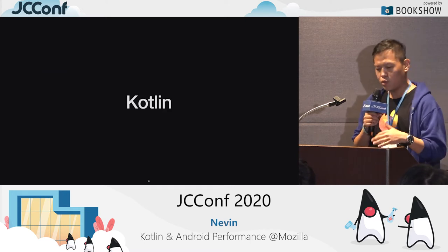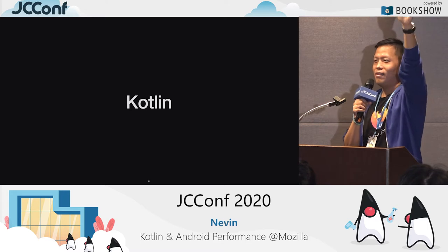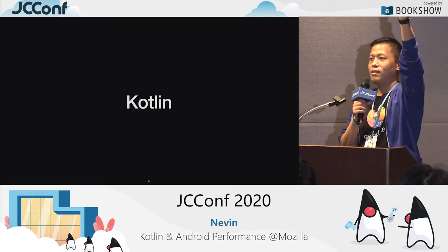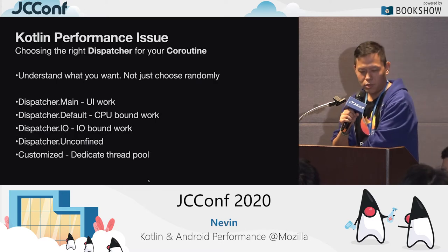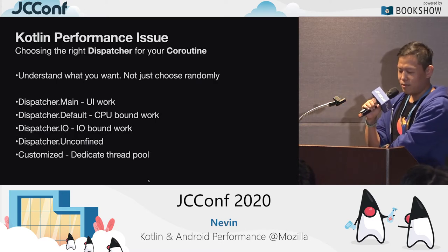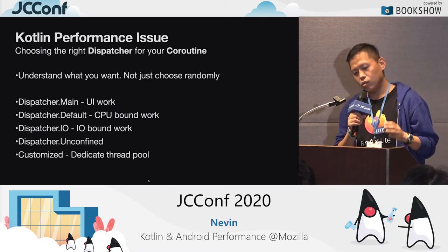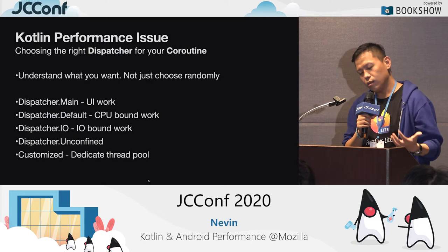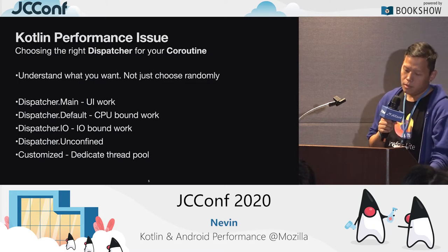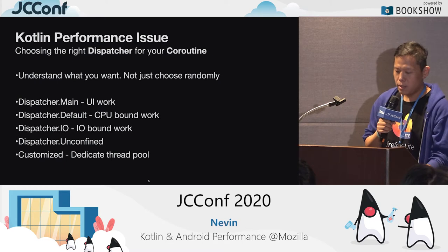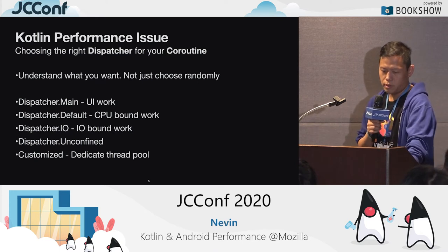Kotlin first. Before I jump in, I want to take a survey — how many of you are server-side developers? How many do both Android and server? There's something you might be interested in. We're going to talk about coroutines. Coroutines have dispatchers. Basically, a dispatcher is the mechanism that lets you specify the thread pool size — the threads that your coroutine is going to work on. Although coroutines let you write asynchronous code in a synchronous way, under the hood it's still threads. There are four preset dispatchers from the coroutine library.